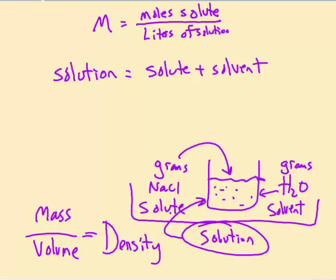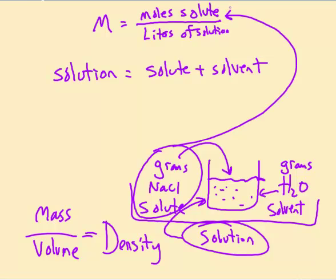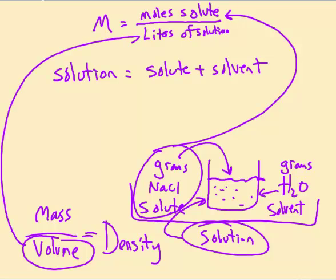Referring back to molarity: if we have grams of solute, we can change that to moles using molar mass calculations. Then for liters of solution, we need to know the volume to get molarity. If we know the volume of the solution and the mass of the solution, we have the density. As long as we have two out of those three, we can calculate the third.